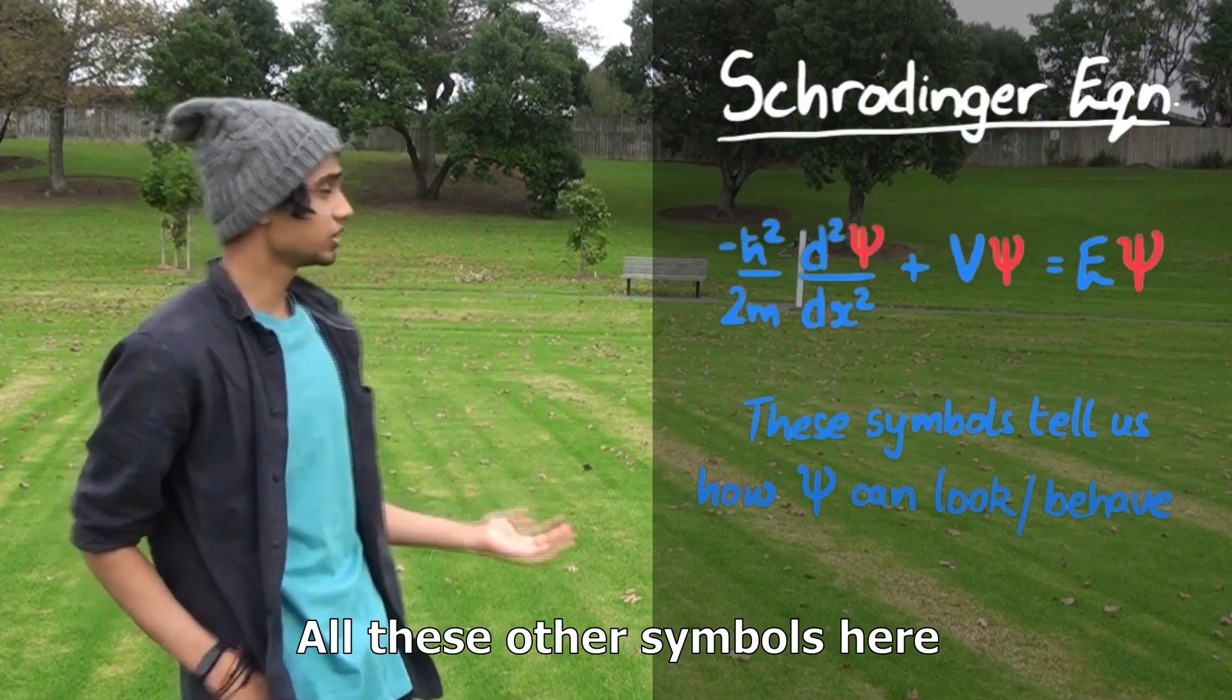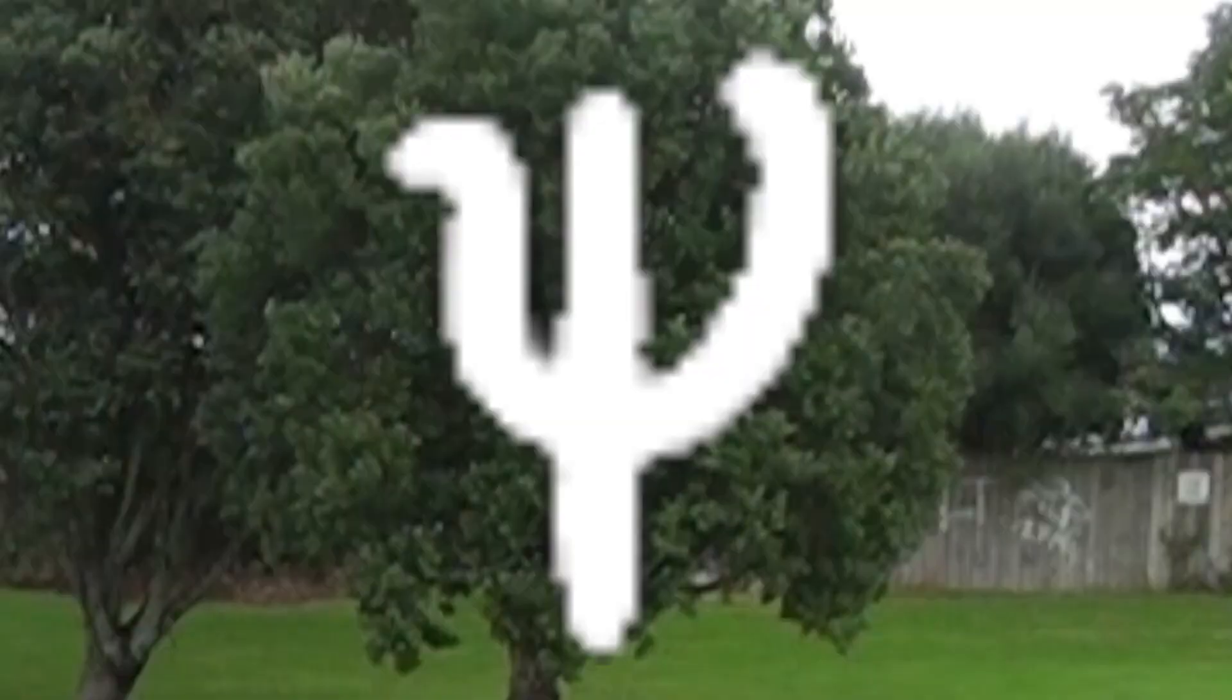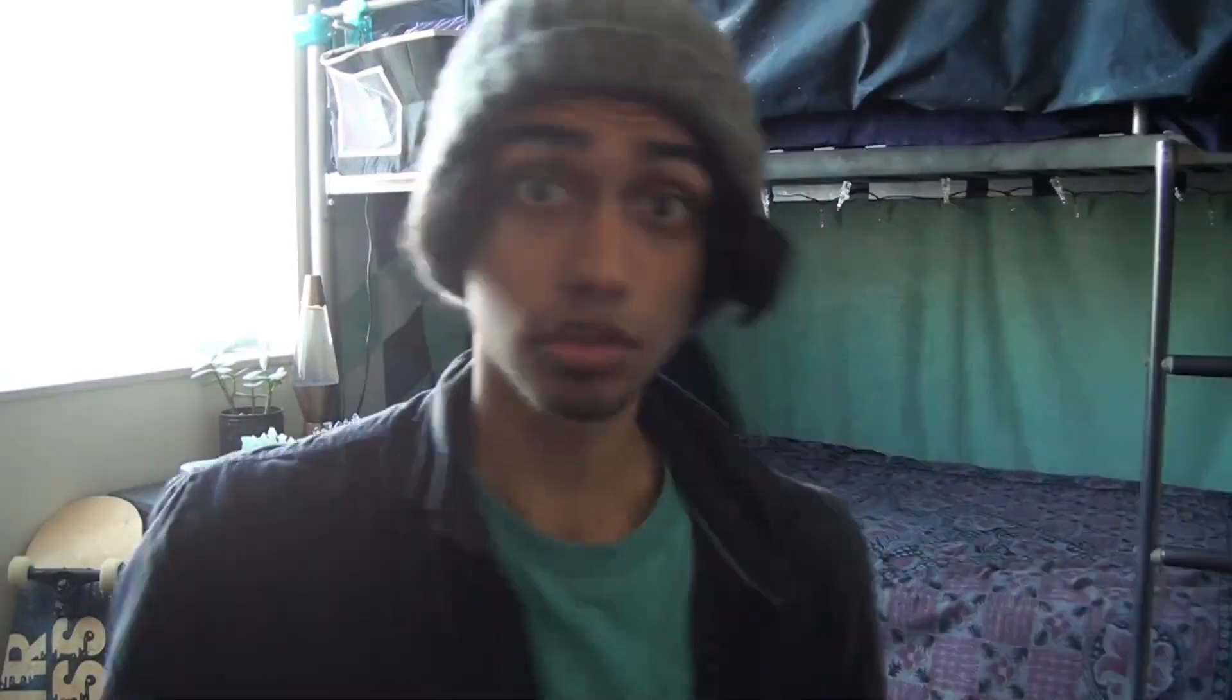Two. All these other symbols are constraints and basically tell us how the wave function can behave, as well as... Three.